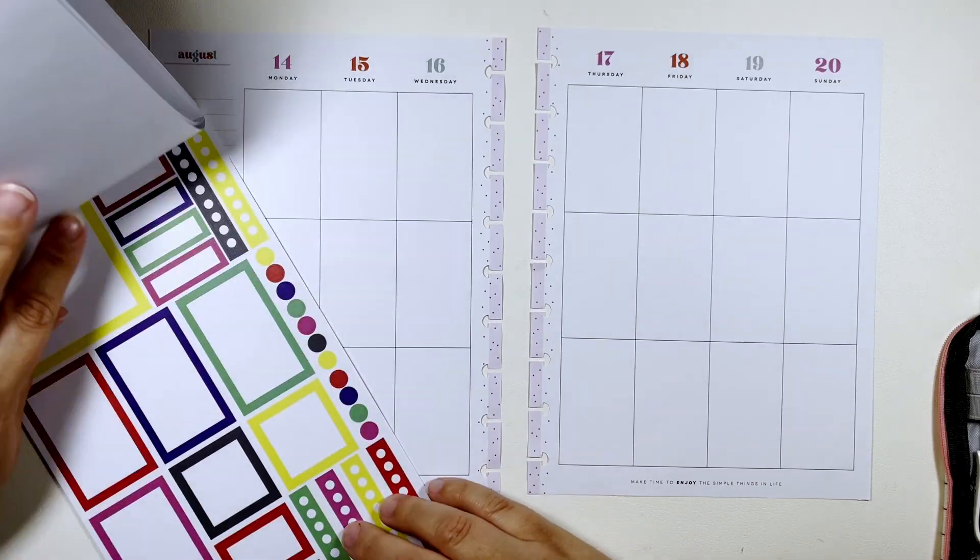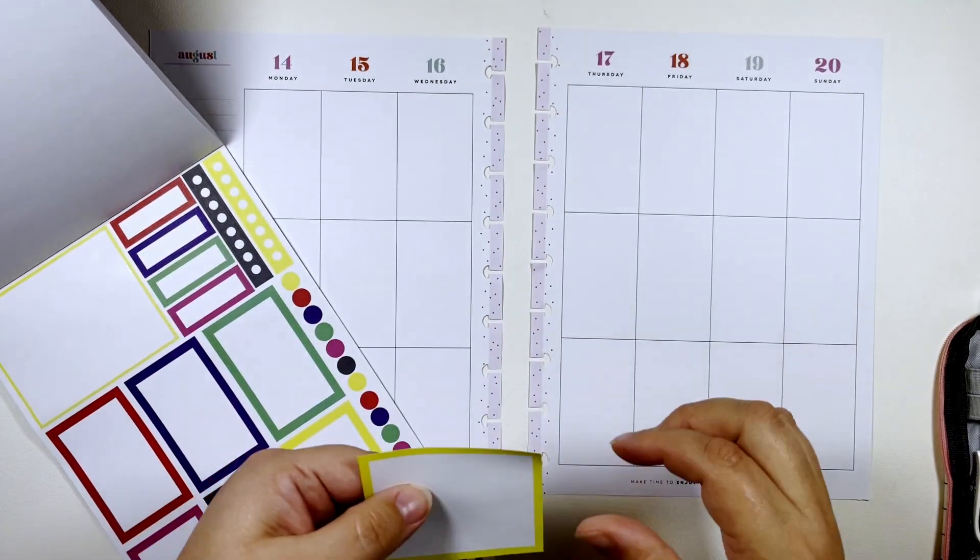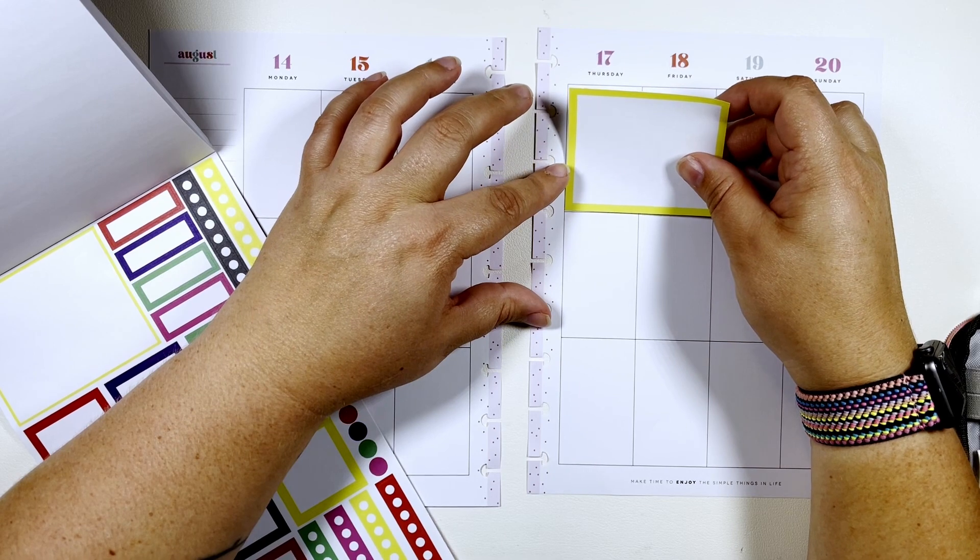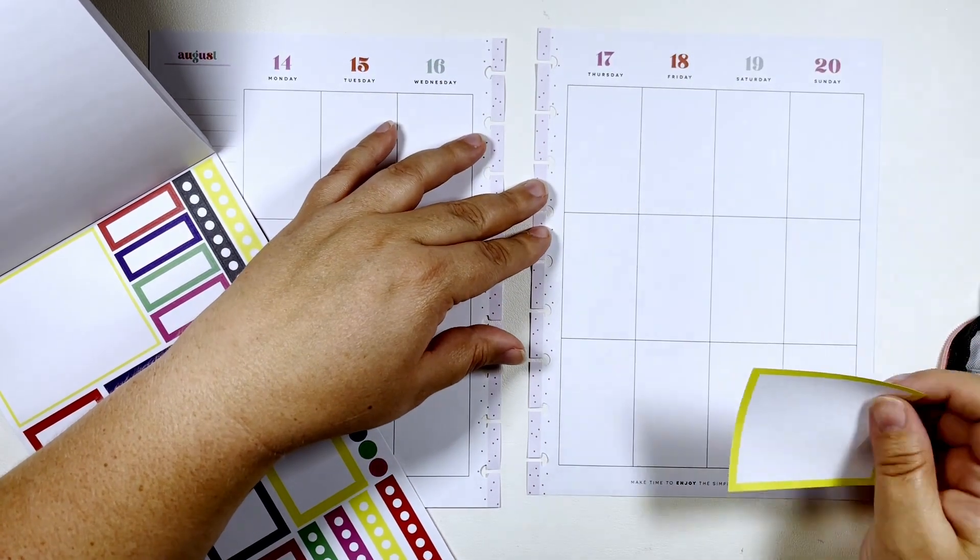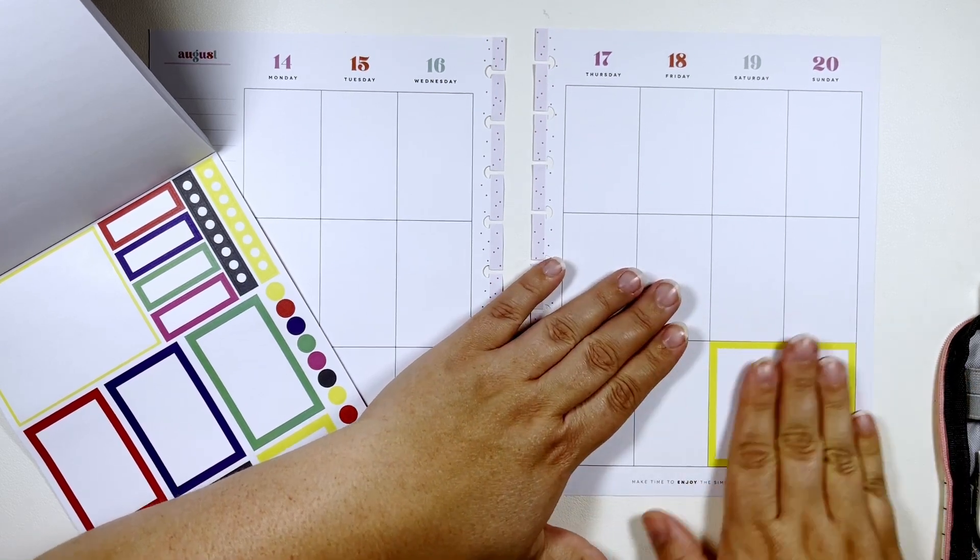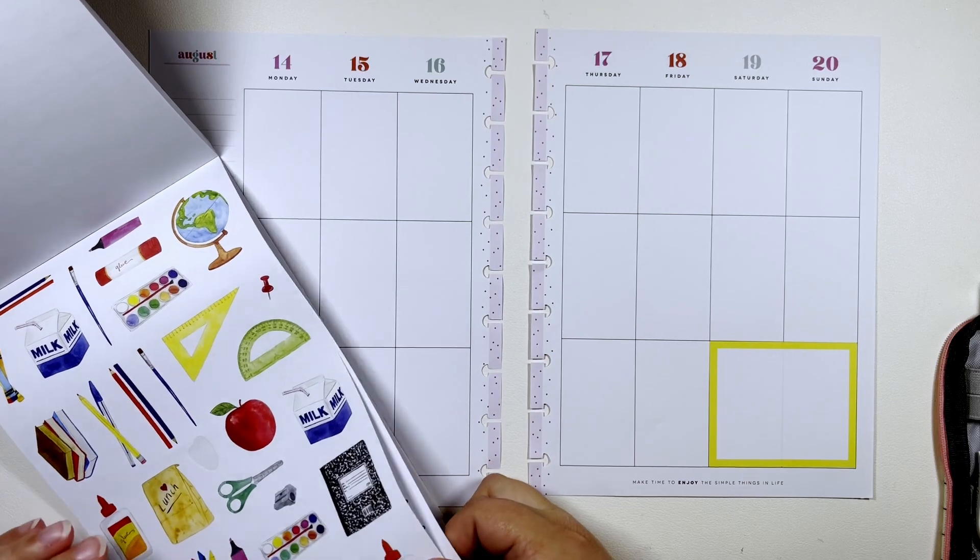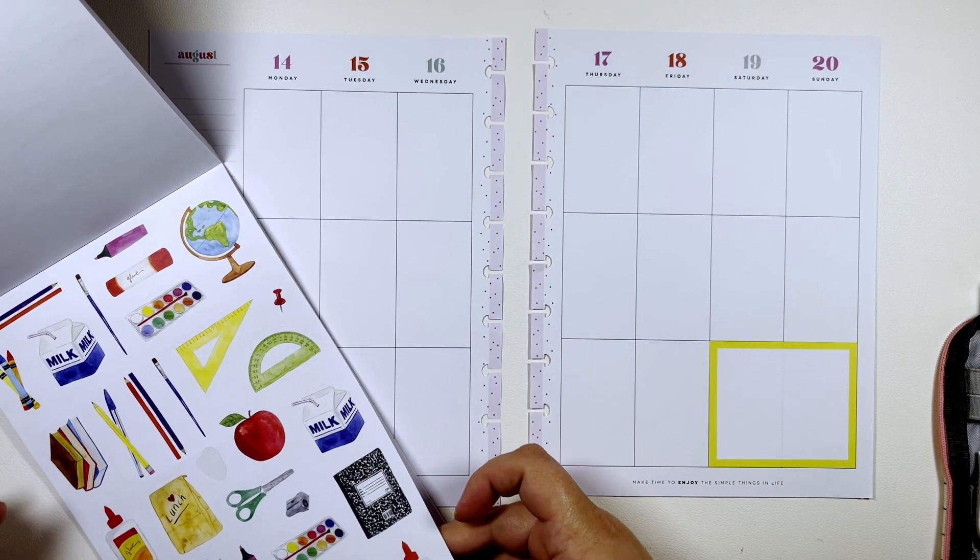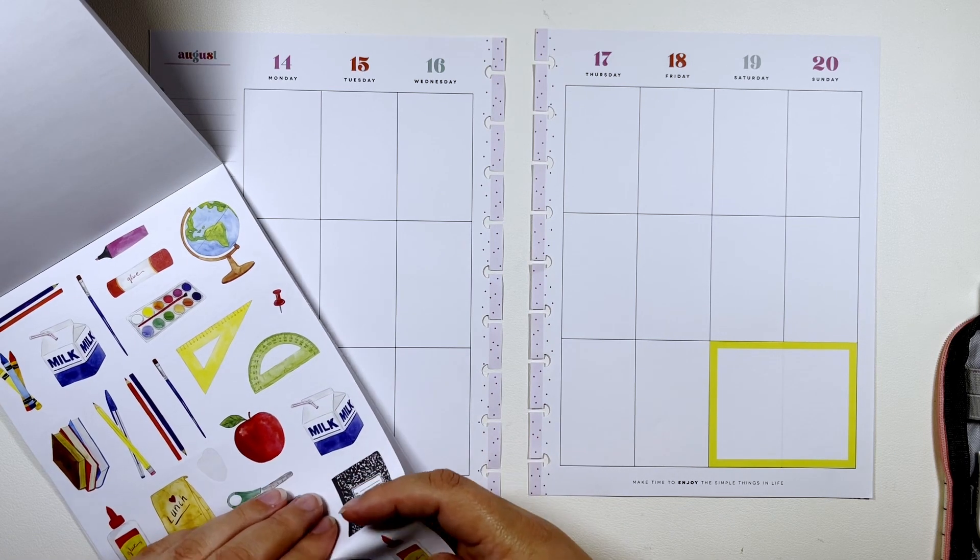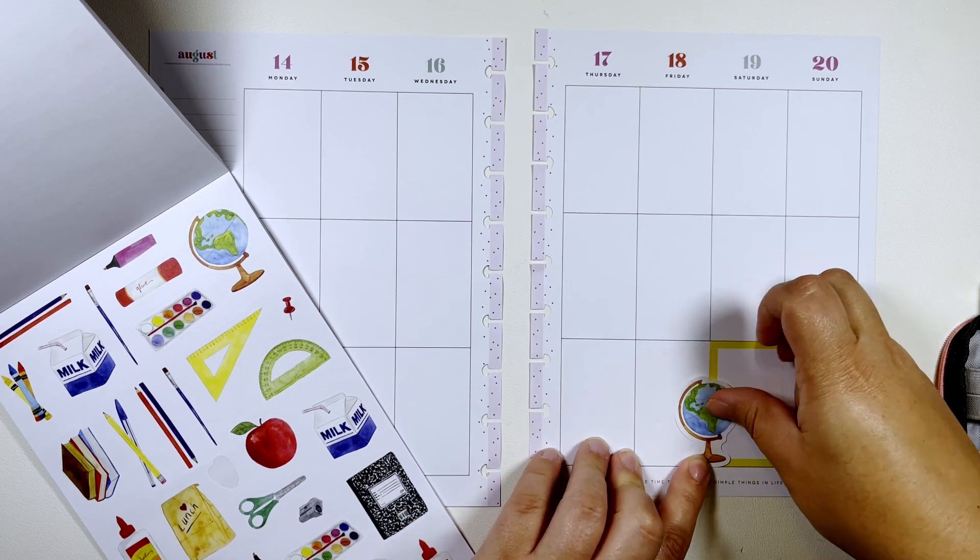So we're gonna start by taking this double box and put it down here on the weekend. We'll throw back to the student planners of Happy Planner. I'm gonna take this little world and put it down here.